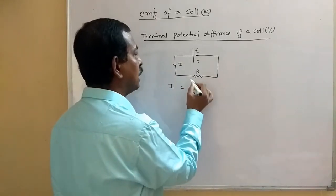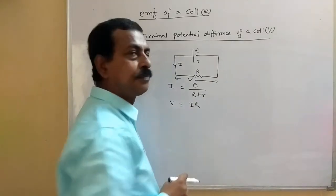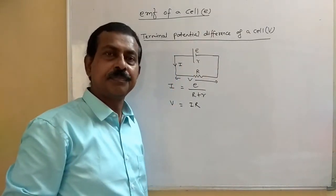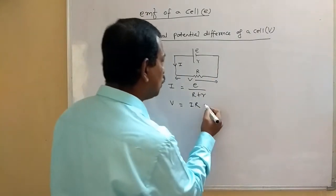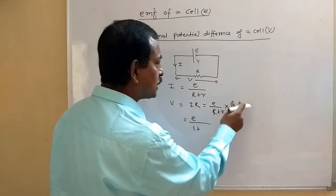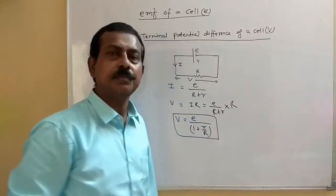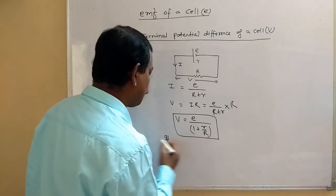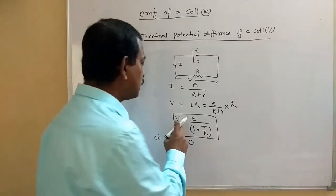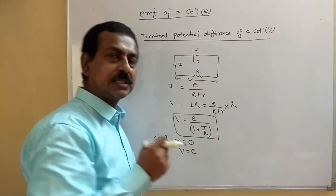If we take the terminal potential difference V, this equals I times R. Since this is also across the terminals of the cell, V equals (E divided by R plus r) times R, which simplifies to E divided by (1 plus r/R). If we take internal resistance r equals zero, then V equals E — the potential difference across the terminals equals the EMF, which is what we used in class 10.